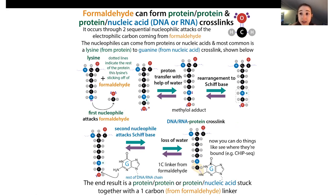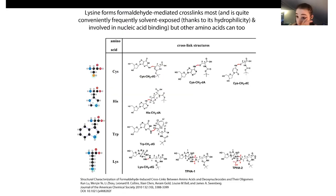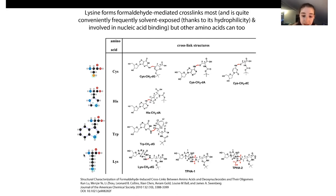Here is the basic mechanism - you're going to have two sequential nucleophilic attacks of that electrophilic carbon coming from the formaldehyde. This can occur through multiple places, with nucleophiles from multiple places. This figure from the paper I'll link to shows crosslinks between cysteine, histidine, tryptophan, and lysine.